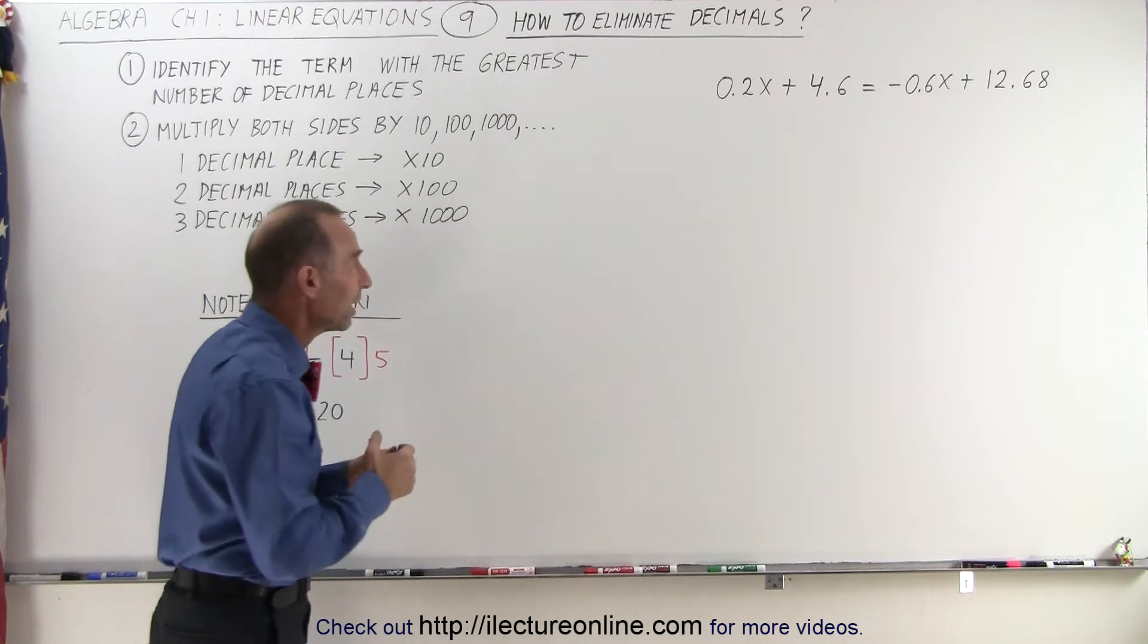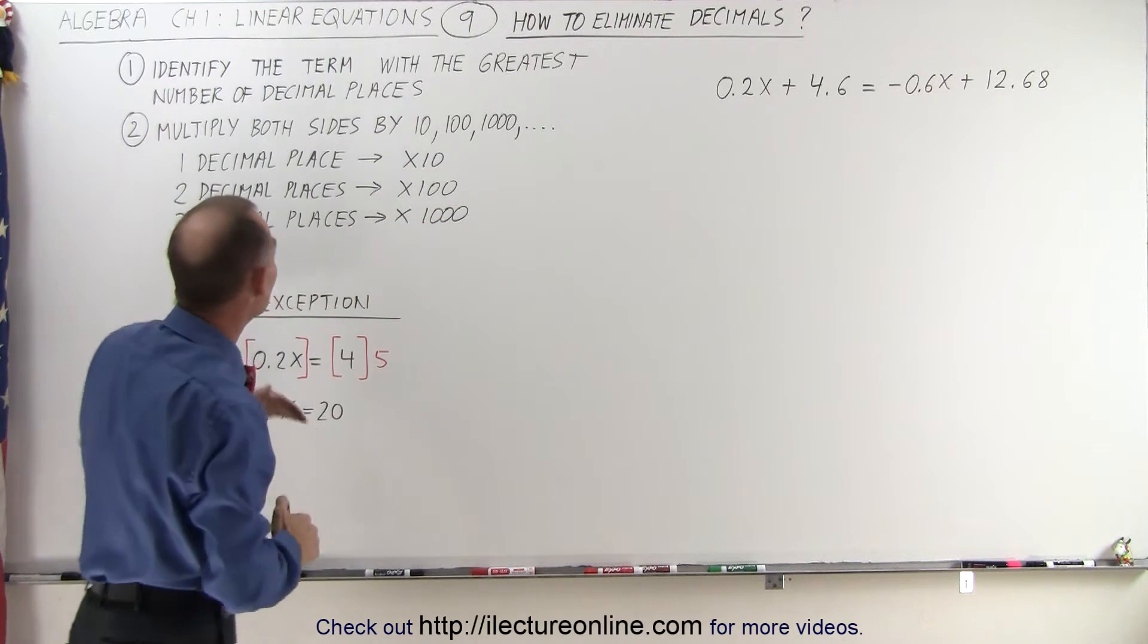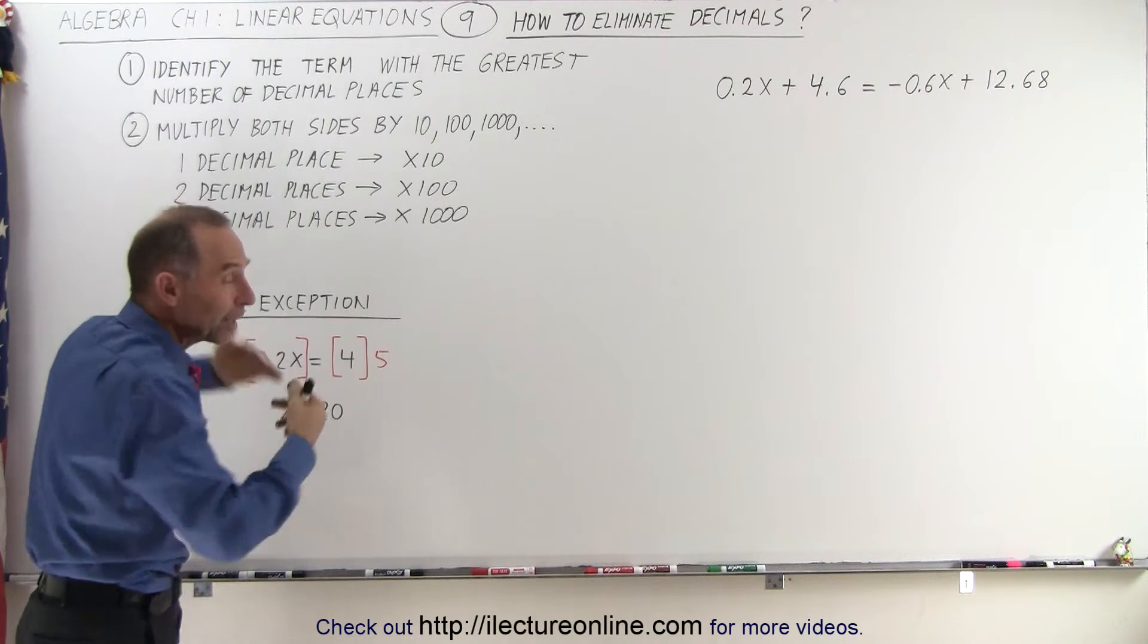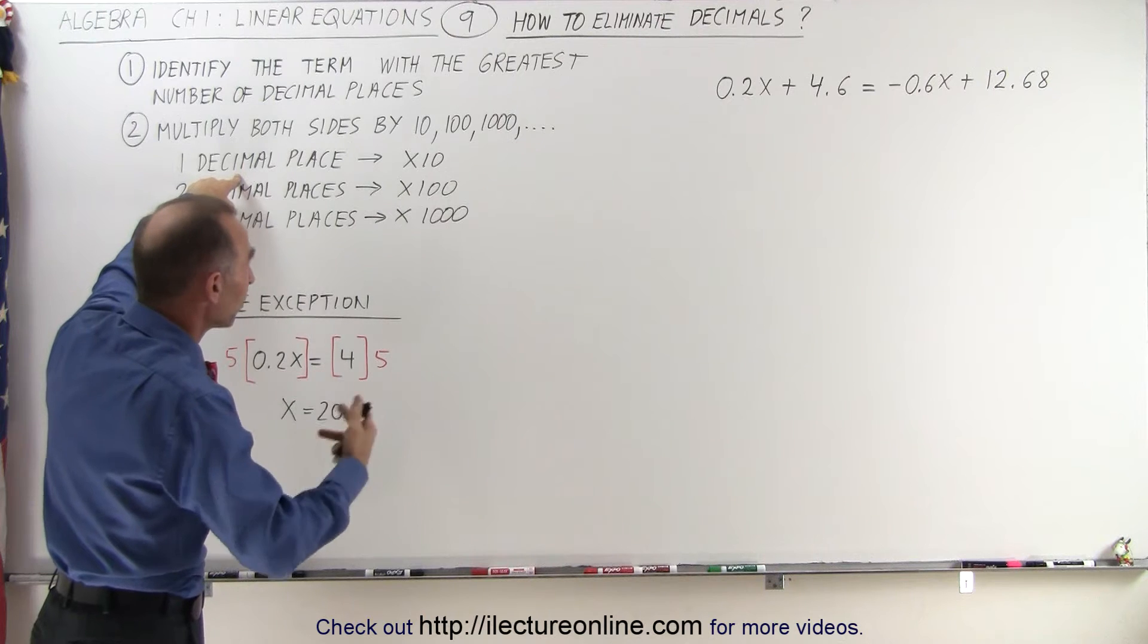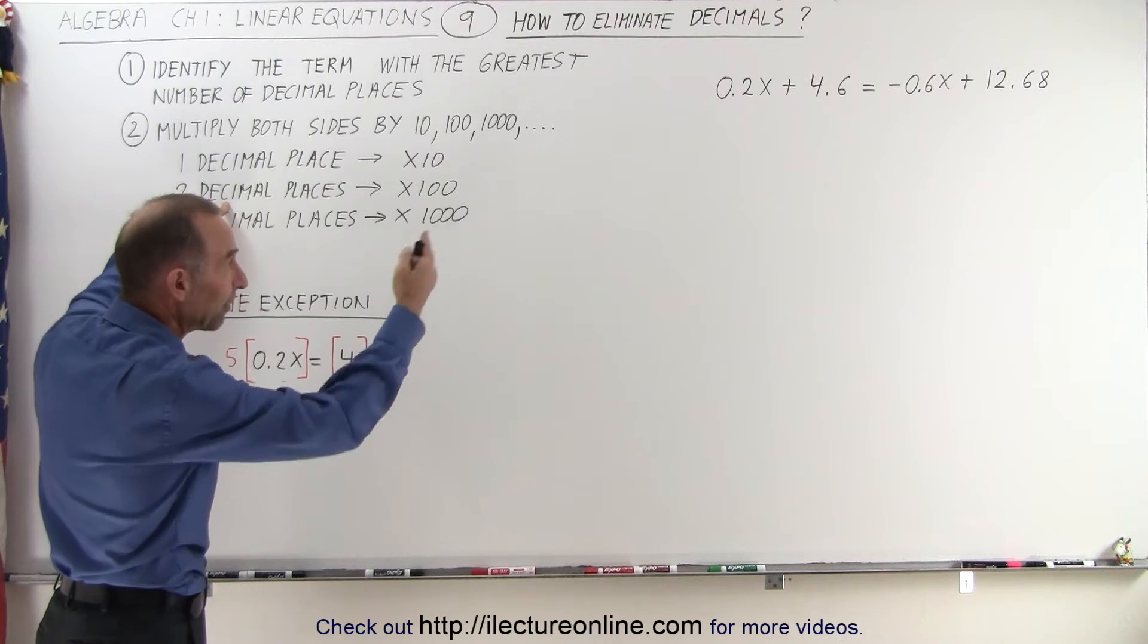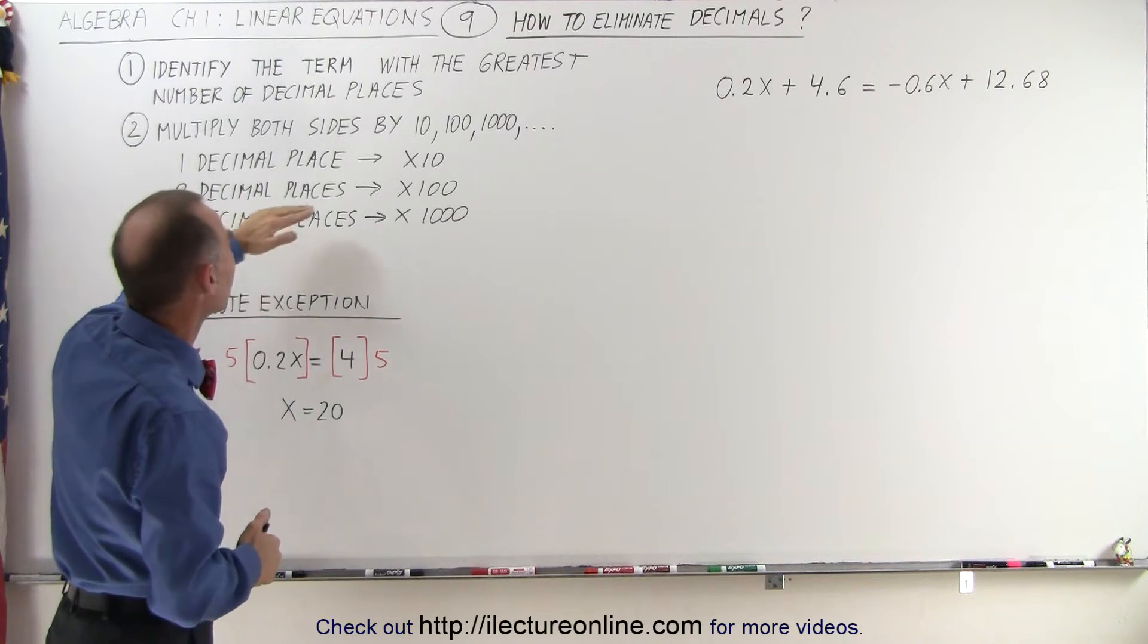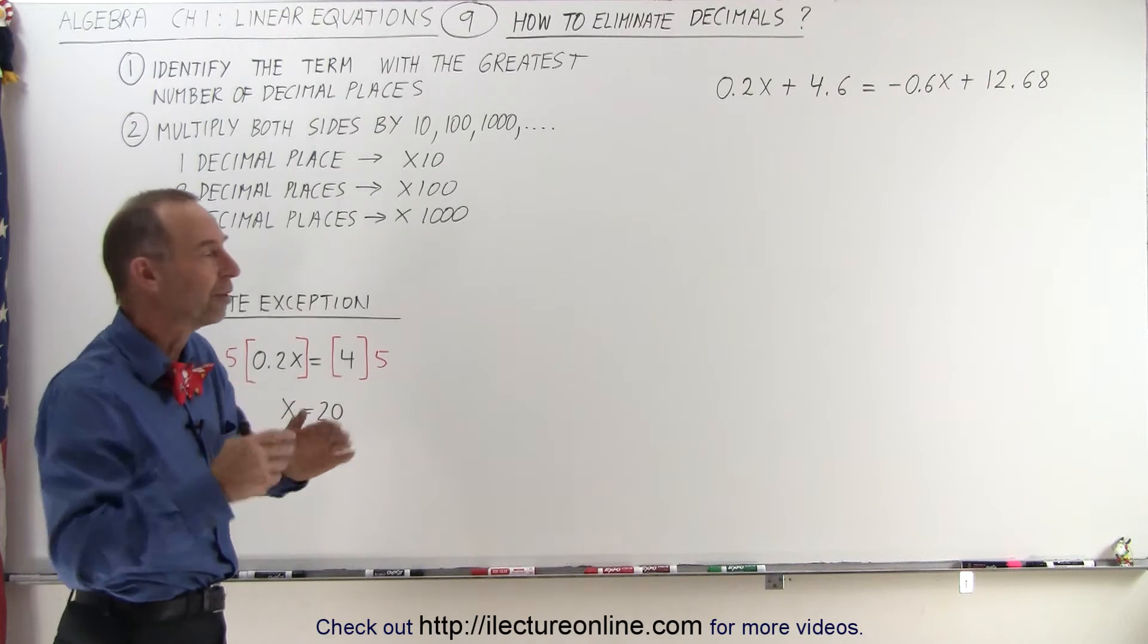Now the rule is that we're going to take the term with the greatest number of decimal places, in this case there's two decimal places, and then multiply both sides of the equation by either 10, 100, 1000, depending upon the number of decimal places. If there's only one decimal place that's the largest number of decimal places, we multiply both sides by 10. But if there's two, like we have in this case, we multiply both sides by 100. If one of the terms has three decimal places, then we multiply both sides of the equation by 1000. The goal is to eliminate all of the decimal places.